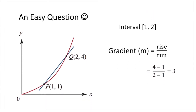Here's an easy question. We know a curve and two points on it, P and Q, and we want to draw a straight line connecting them. We're given both coordinates. The interval is from x1 equals 1 to x2 equals 2. The gradient is rise over run — y2 minus y1 over x2 minus x1 — which equals 3.